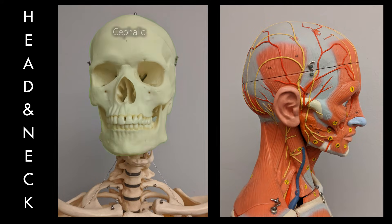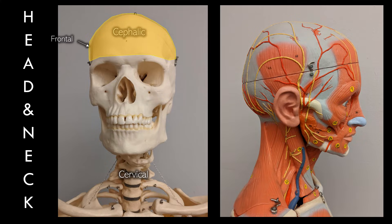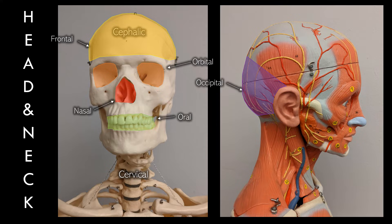Beginning with the head and neck: the entire head can be referred to as the cephalic region, and the neck is the cervical region. We can then break the head down into even smaller regions. Frontal pertains to the forehead, and occipital to the back of the head. Then there's the orbital, nasal, and oral regions, which pertain to the eyes, nose, and mouth respectively.